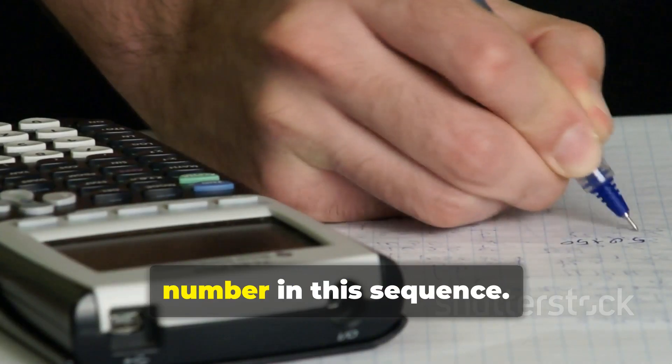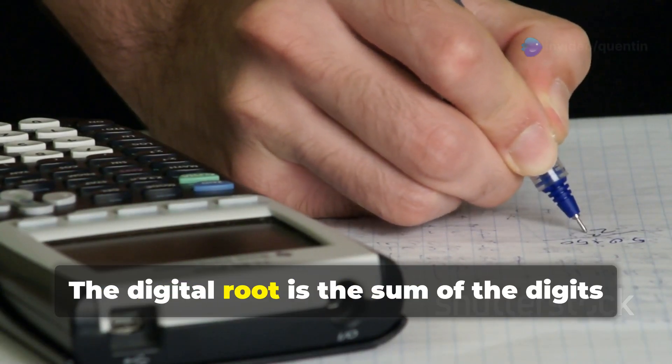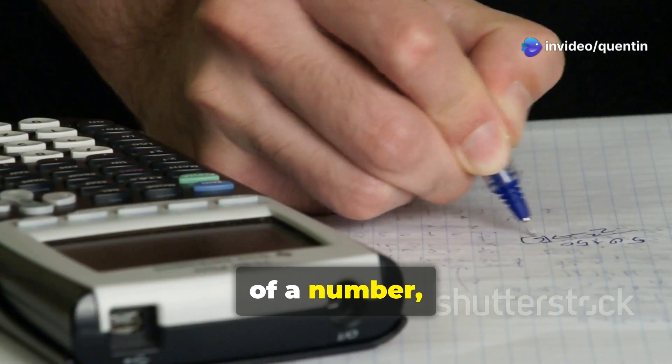Now let's find the digital root of each number in this sequence. The digital root is the sum of the digits of a number, reduced to a single digit.